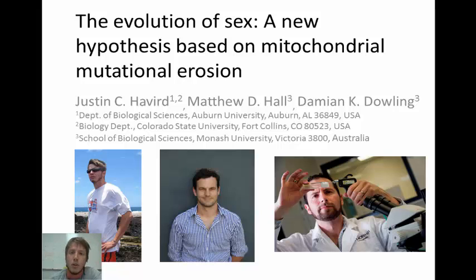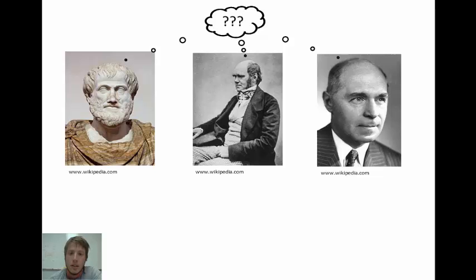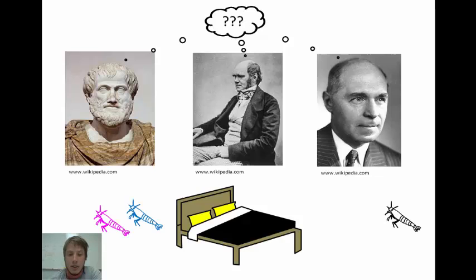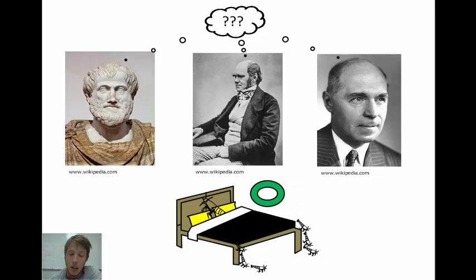The hypothesis is based on mutation accumulation in the mitochondria. Sex is an evolutionary mystery that's puzzled many great minds in the field, and the reason that it's so puzzling is that sexual species, like these pink and blue shrimp, should essentially be outcompeted by asexual species, like this black shrimp, because asexual species can produce more offspring.